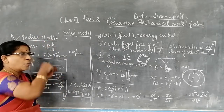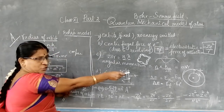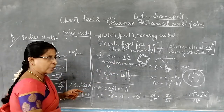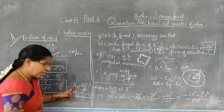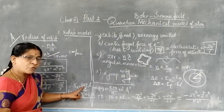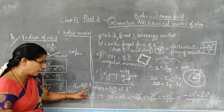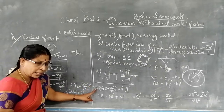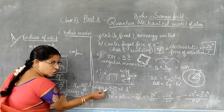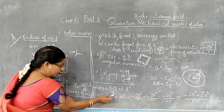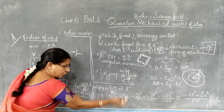For K shell, L shell, M shell, as you move outward from the nucleus, the radius increases — the L shell orbit radius is bigger than K shell. The radius of the nth orbit is equal to 52.9 × n²/Z picometers, where Z is the atomic number and n is the orbit number. If you want to convert it to angstroms, it will be 0.529 × n²/Z angstroms.